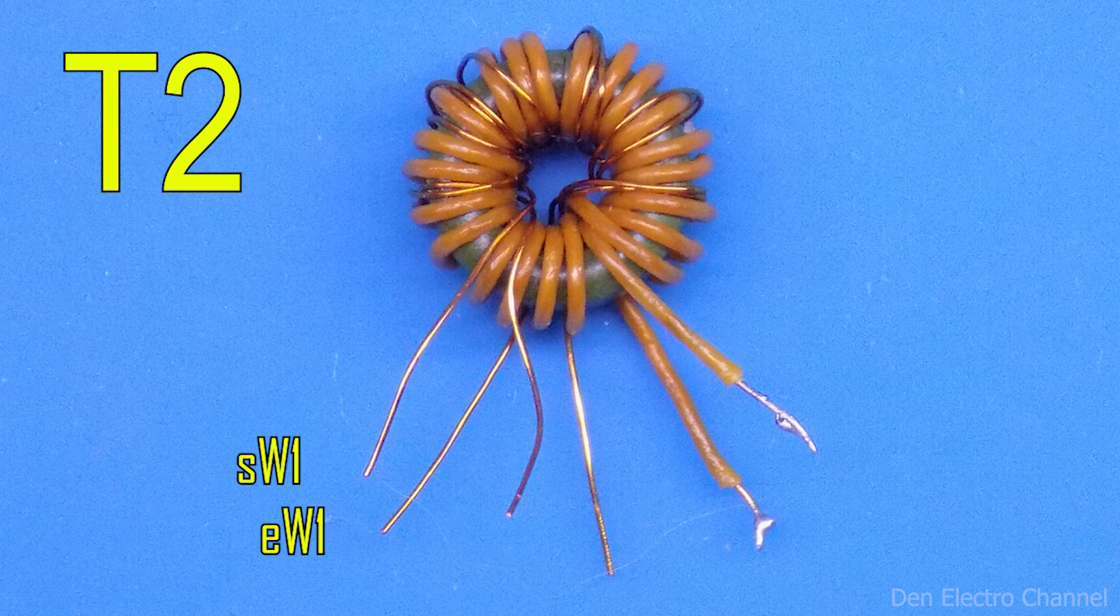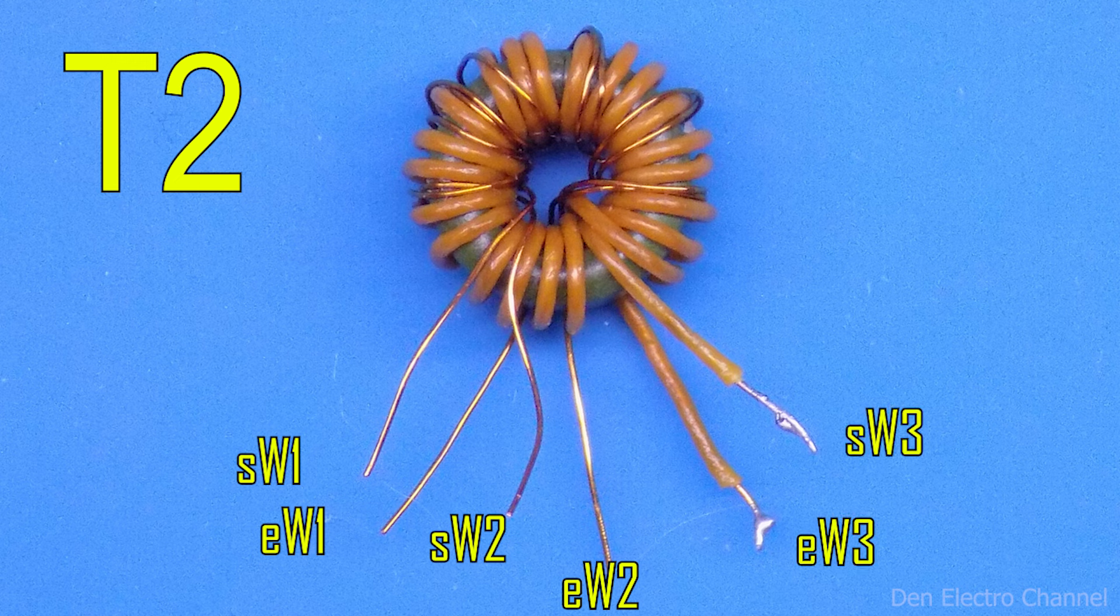Start and end of W1, start and end of W2, and start and end of W3. The diameter of all wires is approximately 0.1 mm.